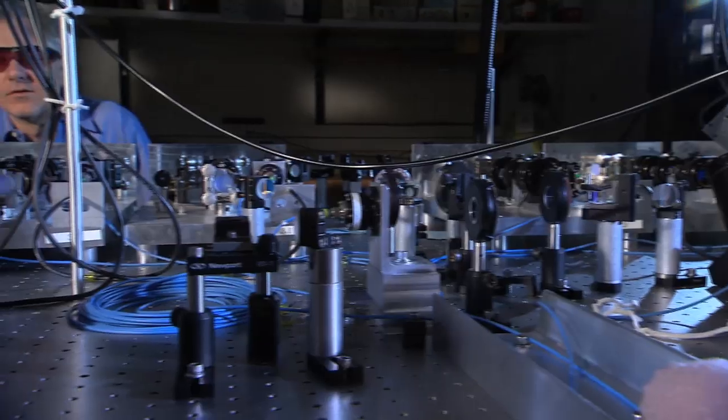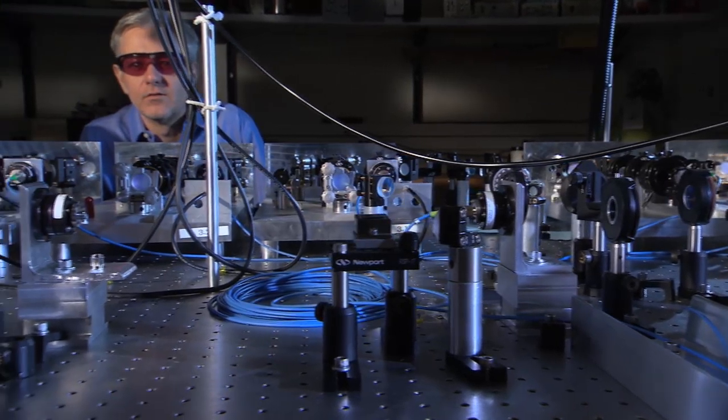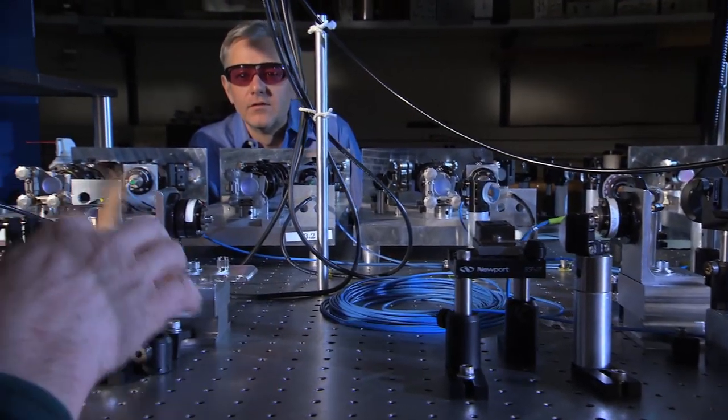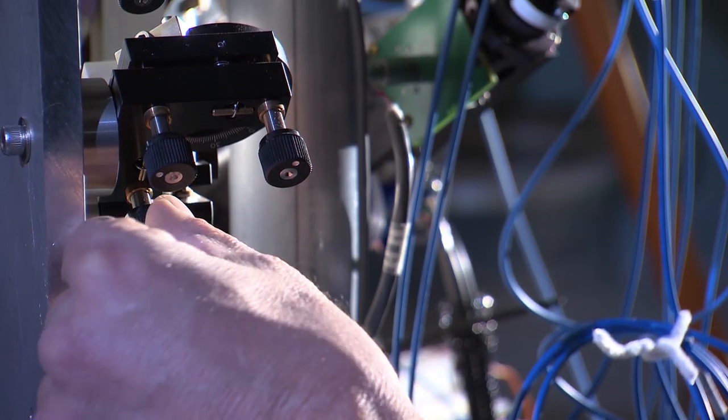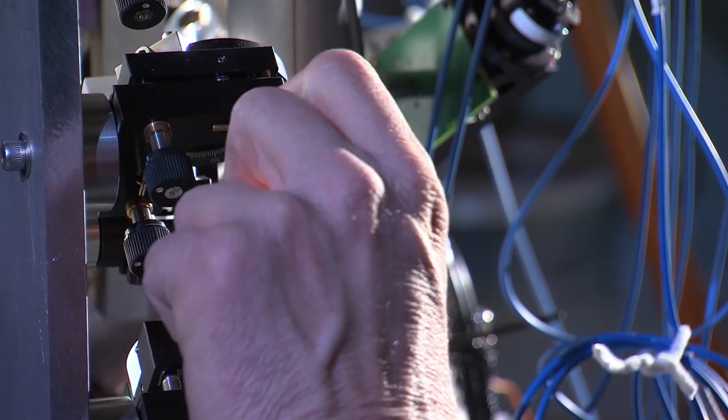The new clock is three times more accurate than the previous NIST standard, NIST F1. Several improvements were made in NIST F2, the most important being to nearly eliminate small errors caused by background radiation.